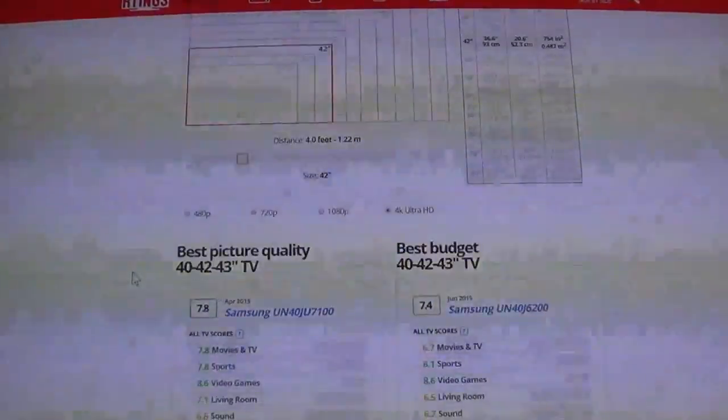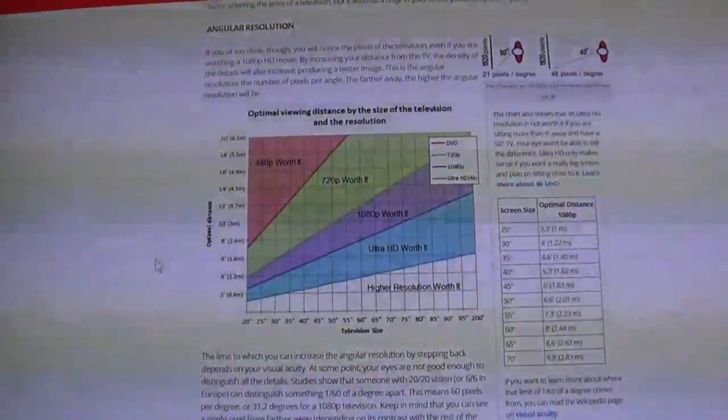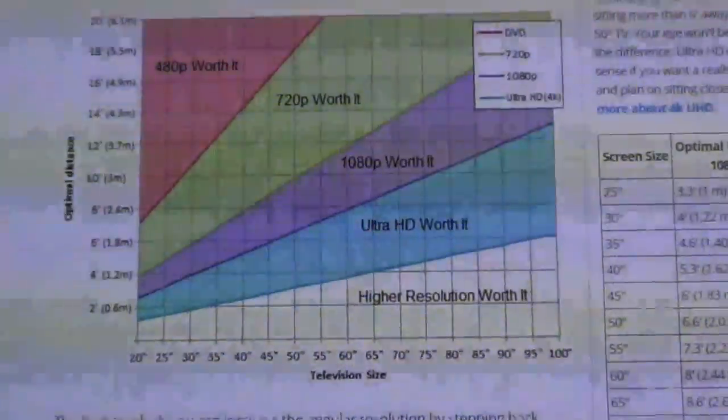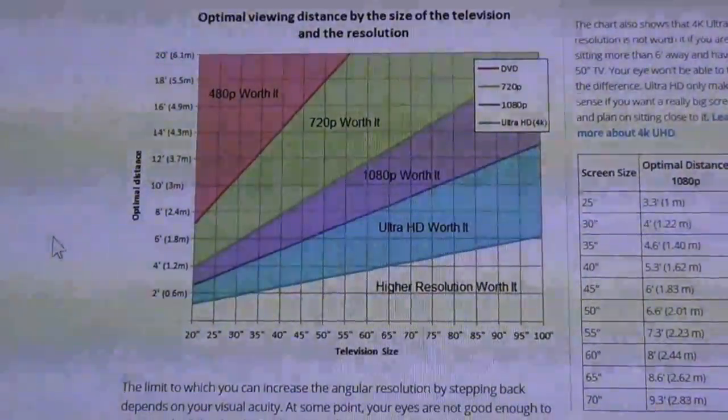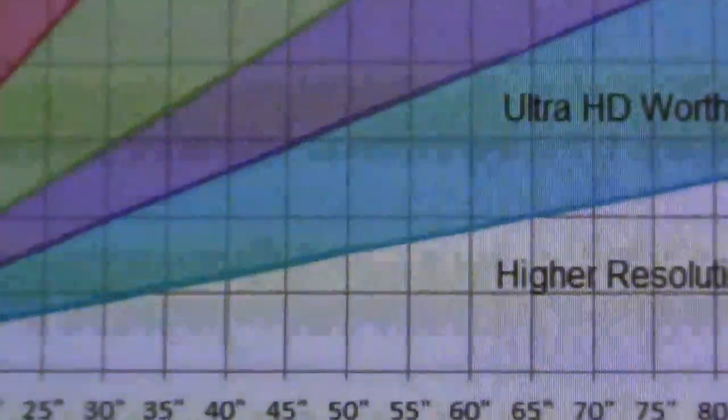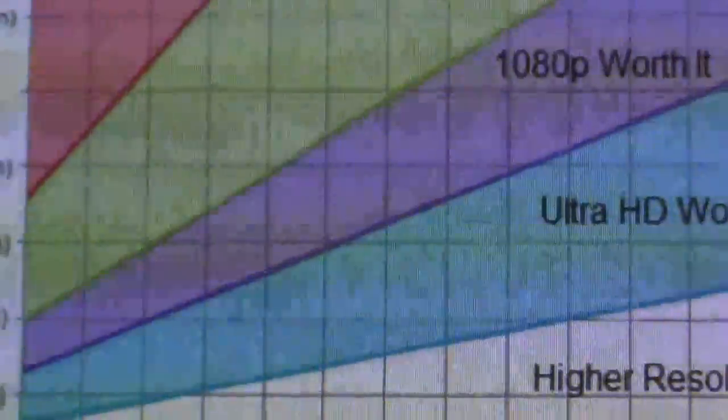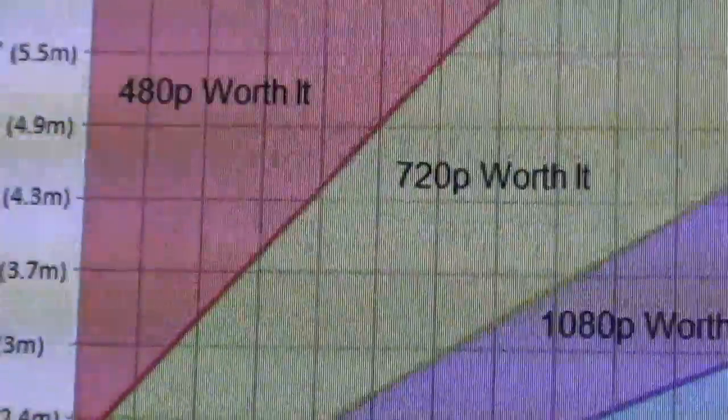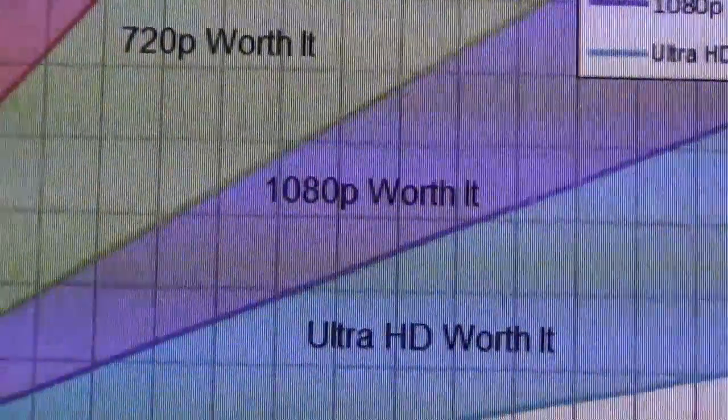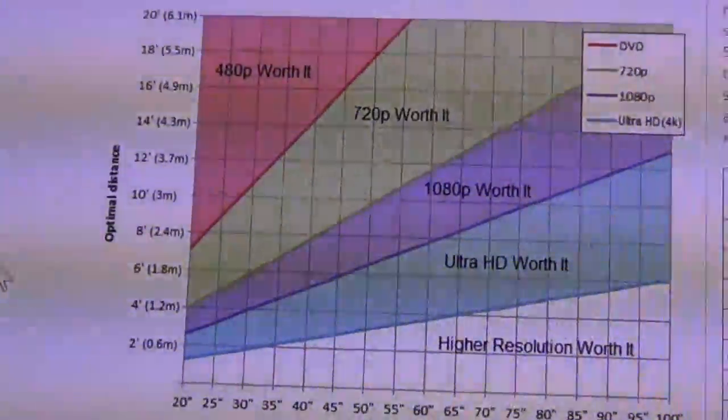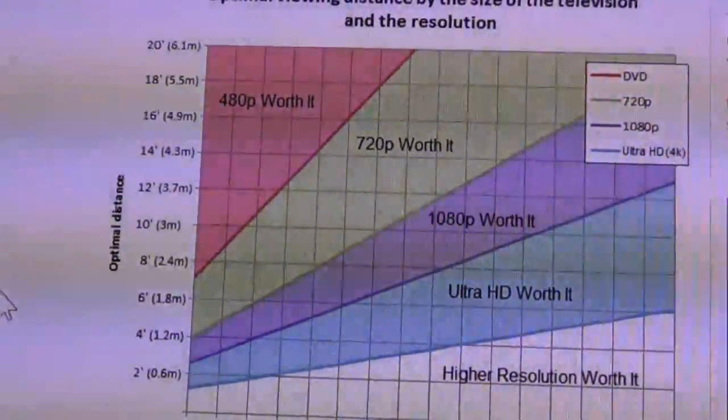So I've been referencing this chart a couple of times over here on Artings, the colorful chart with what's worth it and where. But there is one very important thing that is missing from this chart, and that is the fact that all of these color zones are sliding scales. Ideally, if you want to see if, for example, 1080p is worth it, you want to be no further than the distance indicated by the boundary between the blue and the purple, likewise with 4K, 720p, and standard def.